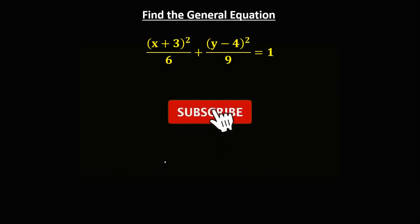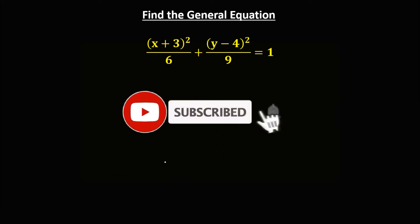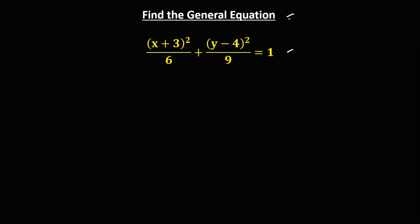Okay, so let's solve this problem. To write this equation in a general form, we need to multiply every term by these two denominators.